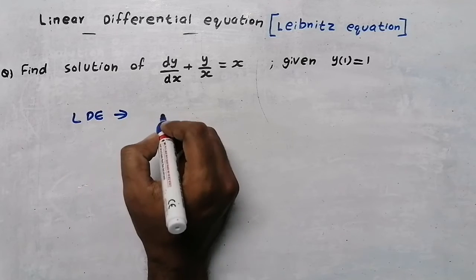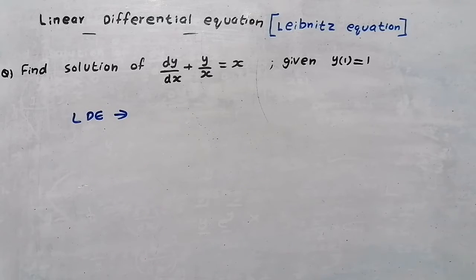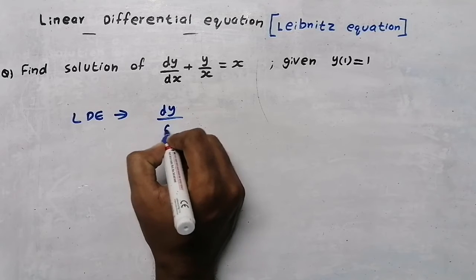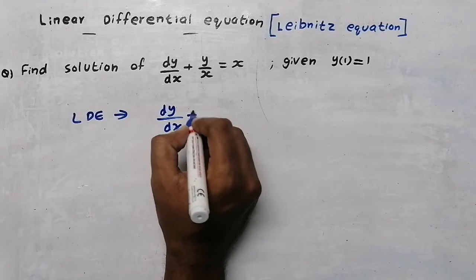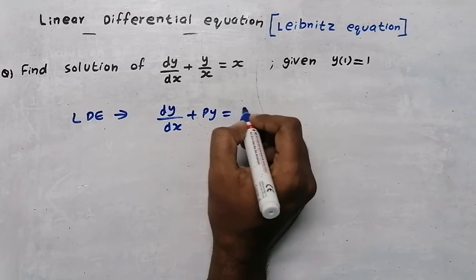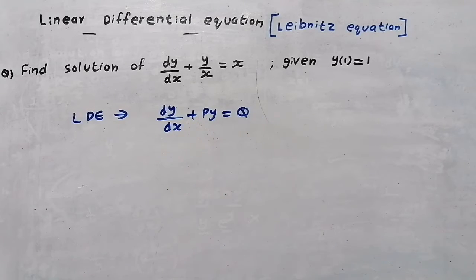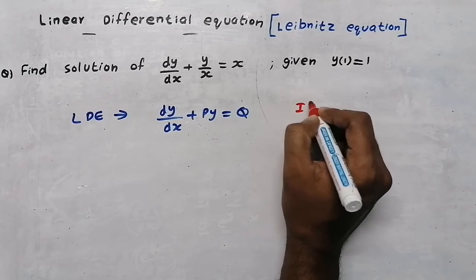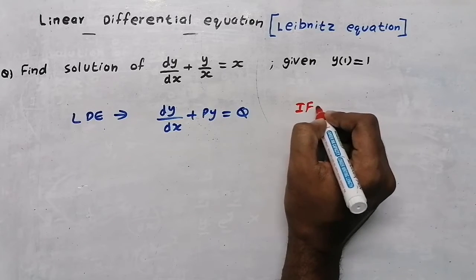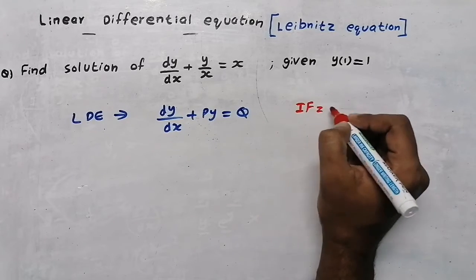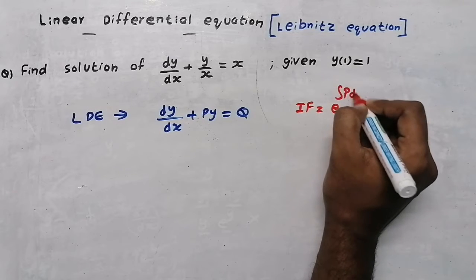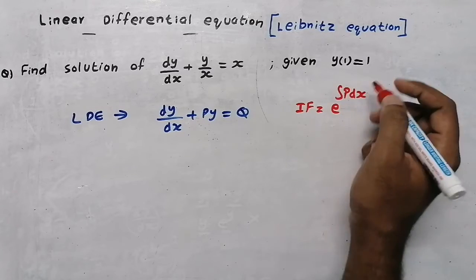To find the solution of a linear differential equation, it has a general form: dy/dx + Py = Q. From this equation we find the integrating factor. The integrating factor is e raised to the integral of P dx. The coefficient near the dependent variable is P.